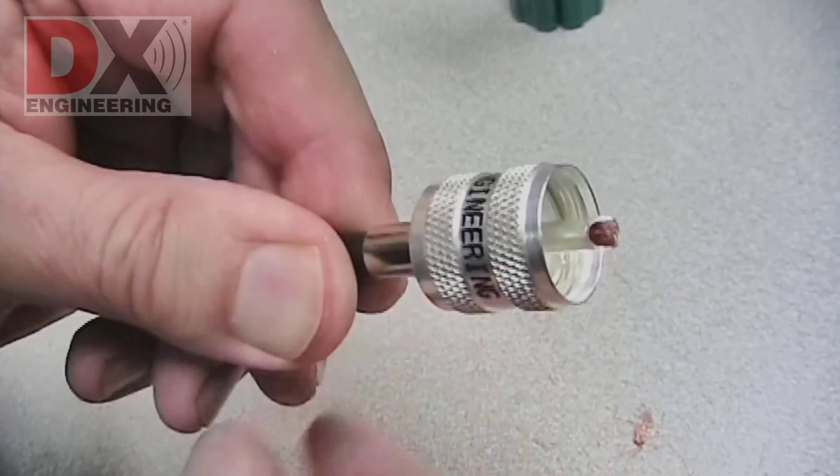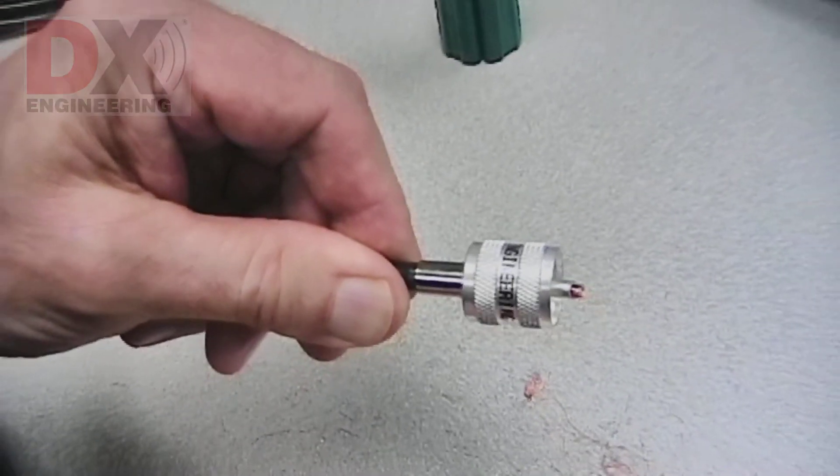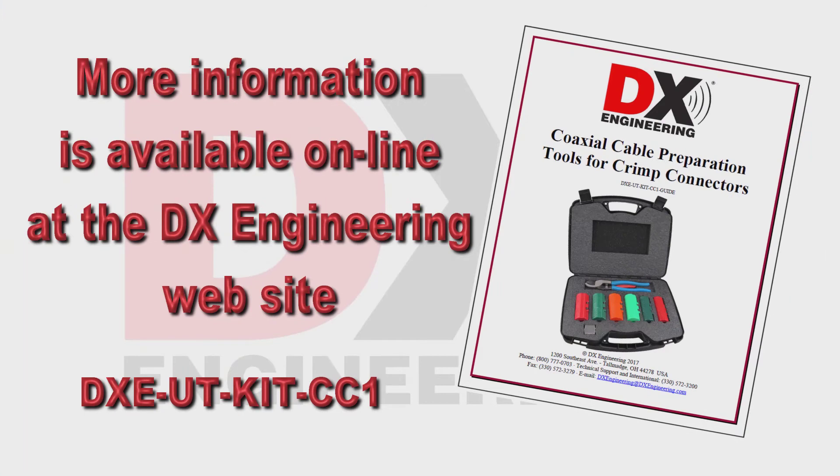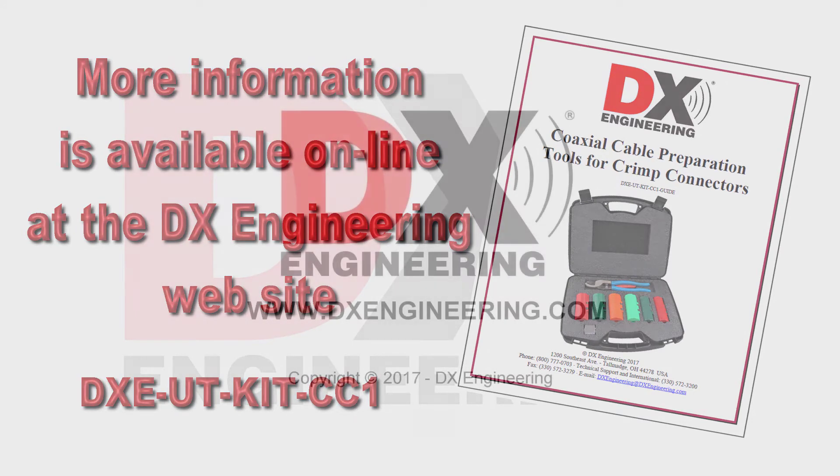The PL259 is now ready to be crimped and have the center pin soldered. You can find out more information about the DX Engineering coaxial cable prep tools on the DX Engineering website.